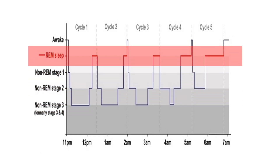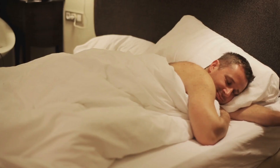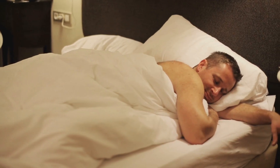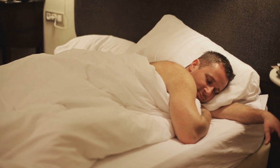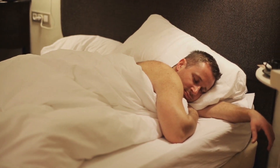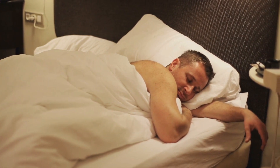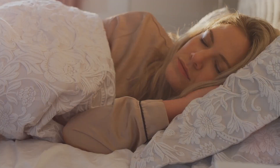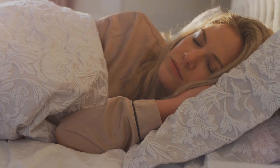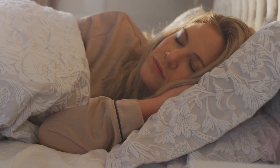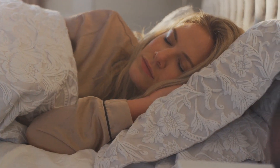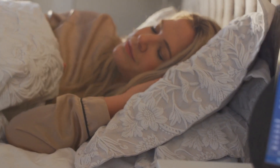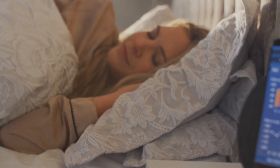Finally, REM sleep is characterized by a mixed frequency waveform that can look similar to wakefulness, except it's accompanied by rapid eye movements and REM atonia, meaning loss of muscle tone or paralysis. There is the shortest duration of REM in the beginning of the night, and that progressively increases across the night — called the normal progression of REM.